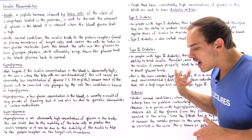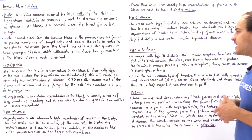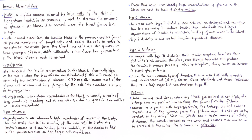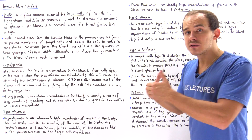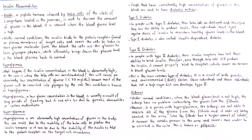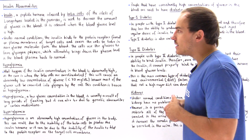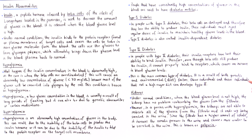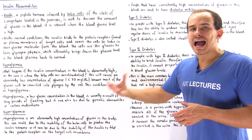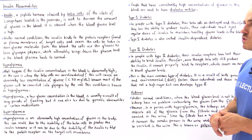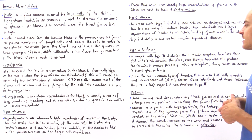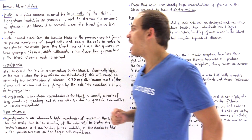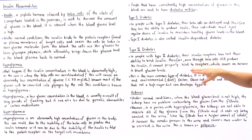In people with type 2 diabetes, the insulin receptors on the target cell membrane have lost their ability to bind correctly with insulin. This means that even though there are enough beta cells producing enough insulin, and even though there is enough insulin in the blood plasma, the insulin cannot properly bind to the receptors. As a result, glucose cannot be transported back into cells to be converted into glycogen, and so there is a high concentration of glucose in the blood.